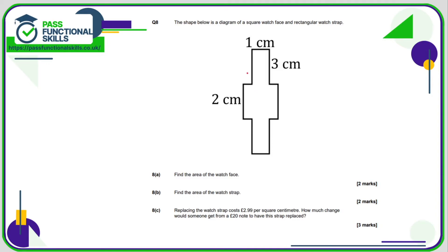Question number 8, the area of the watch face. We're told that the watch face is a square, so it's 2 by 2. 2 times 2 is 4, so 4 square centimeters. And the area of the strap is 1 times 3 plus another 1 times 3. Well, 1 times 3 is 3. So in total, that is 6 square centimeters. And if it costs £2.99 per square centimeter, then for 6 square centimeters, it's going to be £2.99 multiplied by 6.